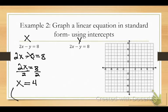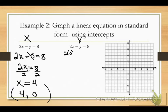How do I put that into an ordered pair? If x equals 4, my ordered pair is 4, zero. Now for the next one: if I want to solve for y, I plug in zero for x. So: two times zero minus y equals 8. Two times zero is zero — it cancels. So negative y equals 8.